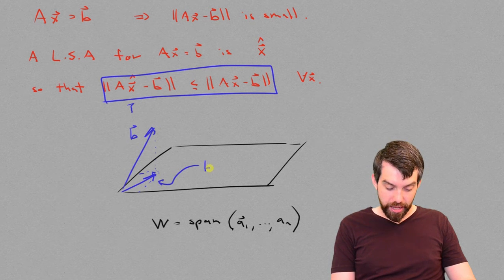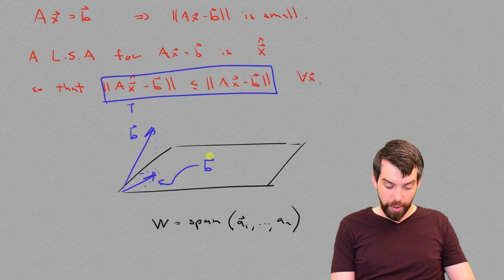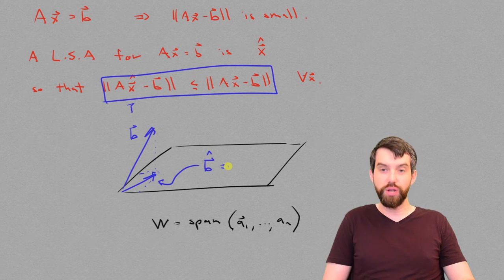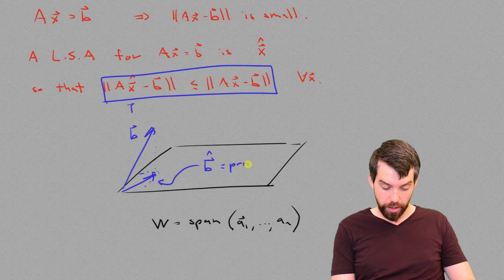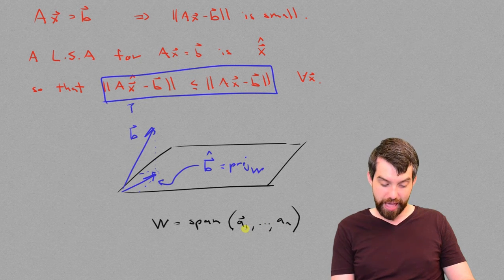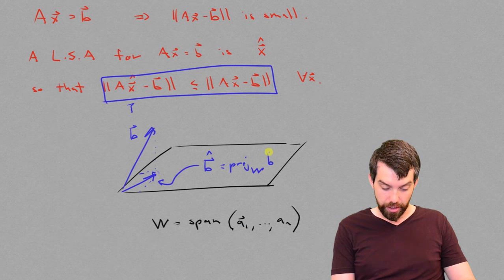and I'm going to call it b vector, but I'm going to put a hat on it. So, in other words, my b vector hat is going to be my projection onto this subspace w, this span of the columns of a, of this vector b.